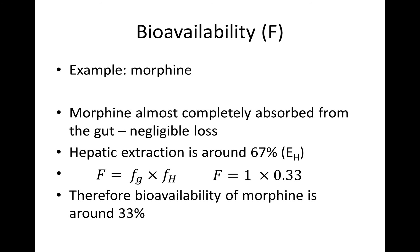This is the hepatic extraction ratio, denoted E subscript H. The formula that takes the two effects into account shows that bioavailability F equals the absorption fraction via the gut — that's little f subscript little g — multiplied by little f subscript capital H, which is 1 minus the hepatic extraction ratio. So little f g is how much is getting in — the fraction of drug that enters the liver but is not extracted prior to entering the systemic circulation. Thus the oral bioavailability of morphine is calculated to be around 33%.